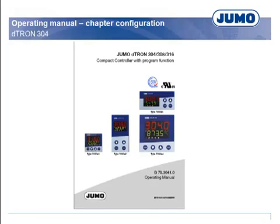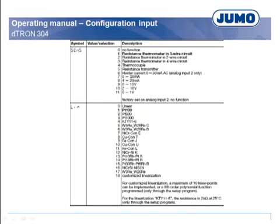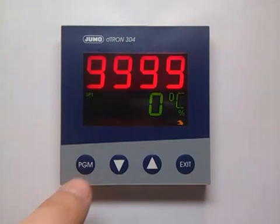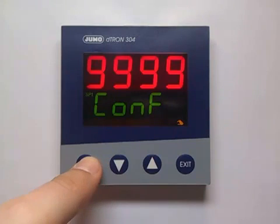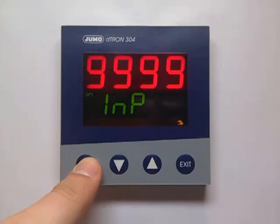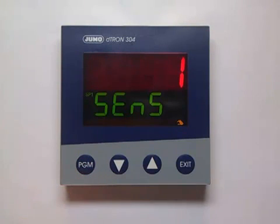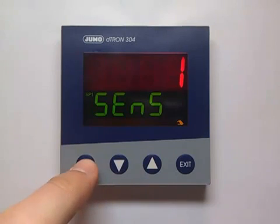Setting in the menu Inputs. For further details, you can refer to the operating manual of the D-Tron series. In the configuration level, you have to define the input signal of input 1 to be 4 to 20 mA. It's a linear signal. Setting of scale for the 4 to 20 mA input: signal is 0 to 200°C. Via the configuration level, you can enter into the menu Input and Input 1. The signal for input 1 is a 4 to 20 mA signal and shows linear behavior.